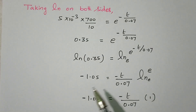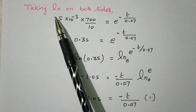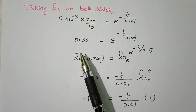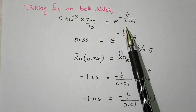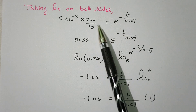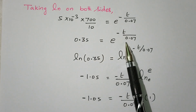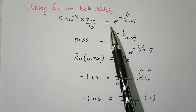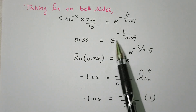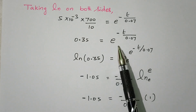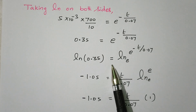In order to find the time T, since e to a power is present, we take the natural logarithm on both sides. Before that, simplifying: bringing 10/700 to the left side gives 700/10 times 5×10⁻³, which equals 0.357, so: 0.357 equals e to the power of minus T divided by 0.07. Now we take the natural log on both sides since T is in the exponent and cannot be simplified otherwise.